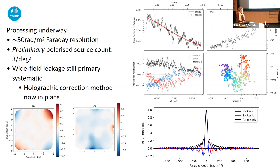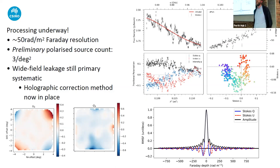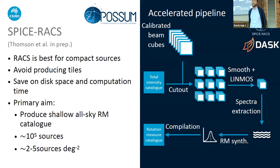A question from Danica Scott: are there plans for a Python module or similar to allow RACS/SPICE-RACS lookup within Python? Yes — as part of the pipeline I build a database along the way, and I'm looking to hopefully make that web-based at some point. The data will also be deposited on CASDA for lookup, and the pipeline itself will go public with the initial release of the data.